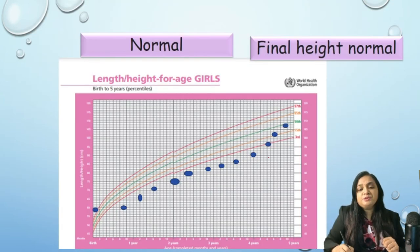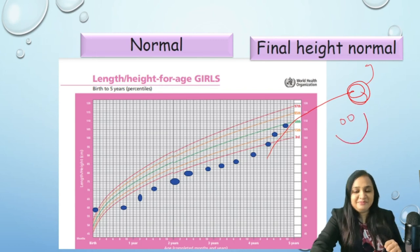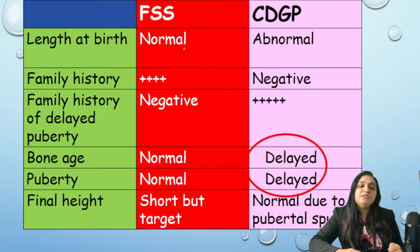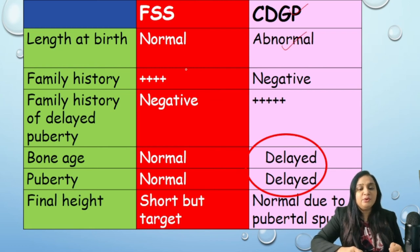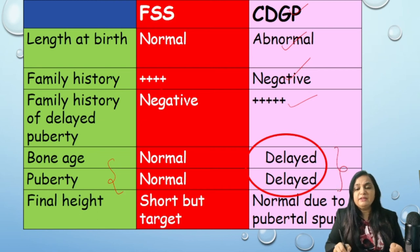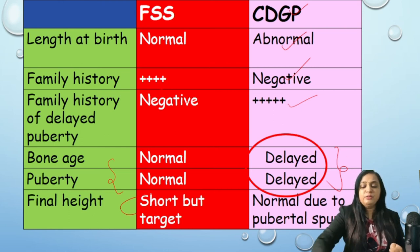Whenever there is a growth spurt in CDGP, the child crosses the centile and the final height achieved is normal — so the whole family is happy. Comparing FSS and CDGP: birth length is normal in FSS but may be abnormal in CDGP; family history of short stature is positive in FSS but negative in CDGP; delayed puberty is absent in FSS but present in CDGP; bone age is normal in FSS but delayed in CDGP; and final height is short but within target in FSS, whereas it is normal in CDGP due to the pubertal growth spurt.